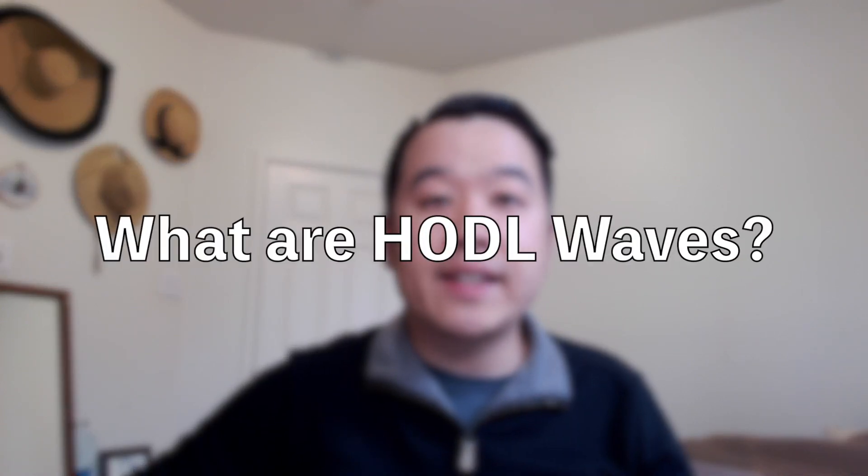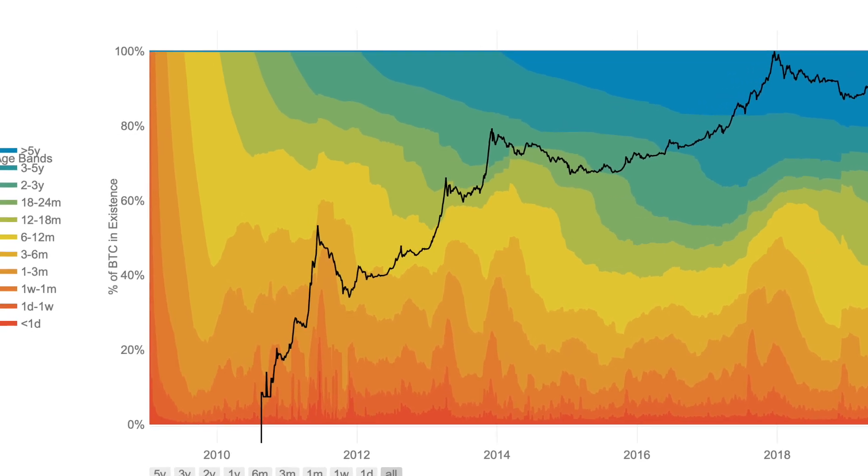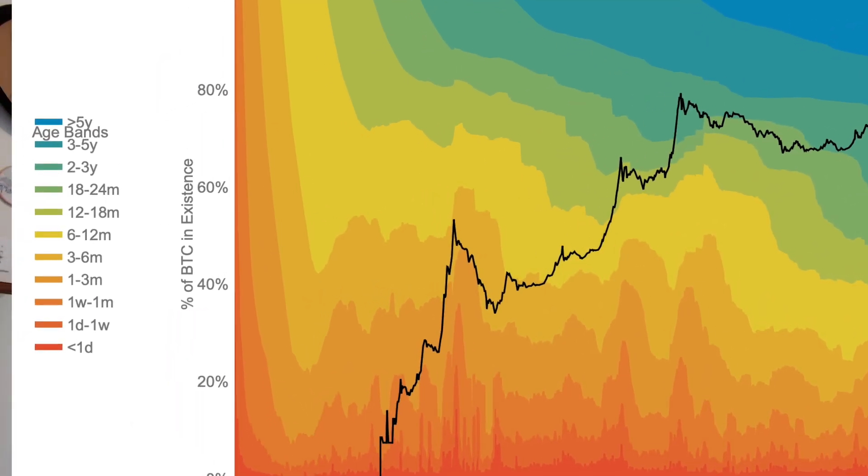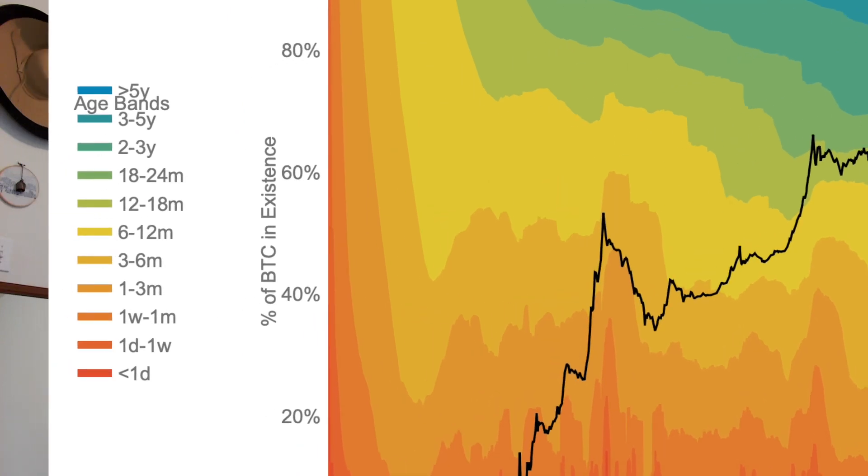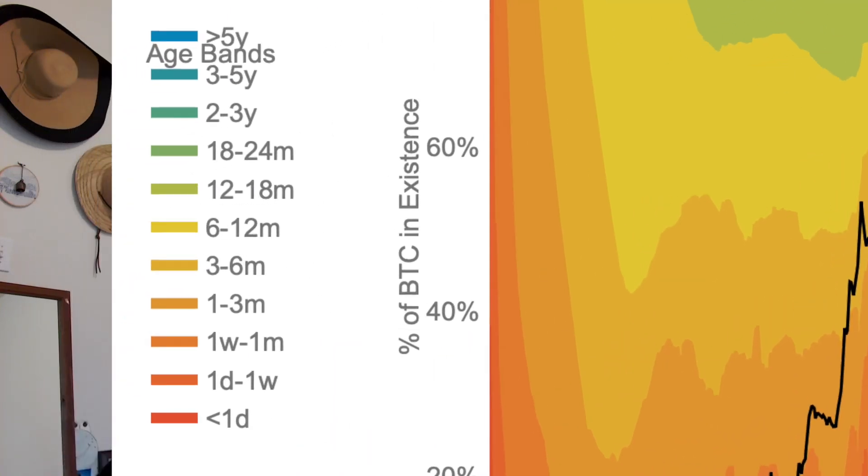So what are HODL waves at the highest level? Essentially it's a visual representation — you can plot it out in a graph or chart — of the following concept: out of all bitcoin in existence, how many or what percentage of them were last transacted within various time windows, whether that be within the last day, last week, last month, last six months, year, two years, five years. There are various time windows from small to large, and there is a percentage of bitcoin in each of those bands.